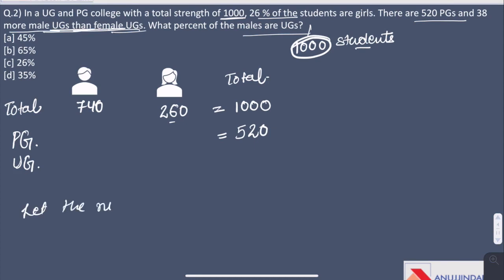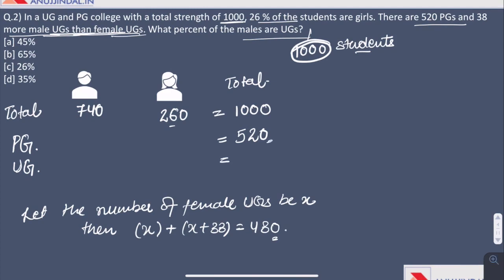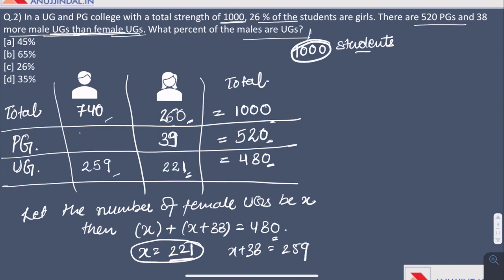The total number of PG students is 520. To calculate the number of UGs, let the number of female UGs be X. Then X plus X plus 38 equals 480. After subtracting 520 from 1000, we know the total number of UGs is 480. So X equals 221. So 221 female UGs and 259 male UGs. After subtracting the number of UGs from the total, we get 39 female PGs and 481 male PGs.